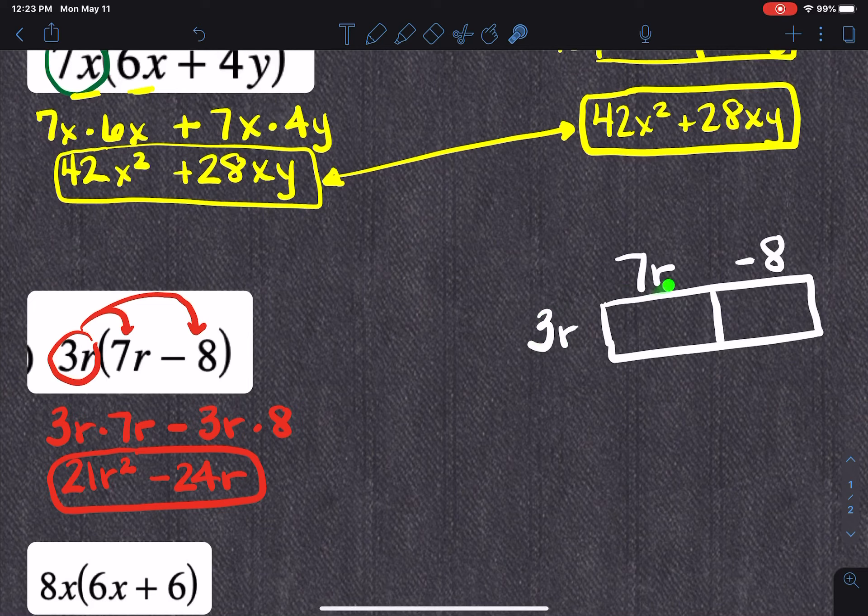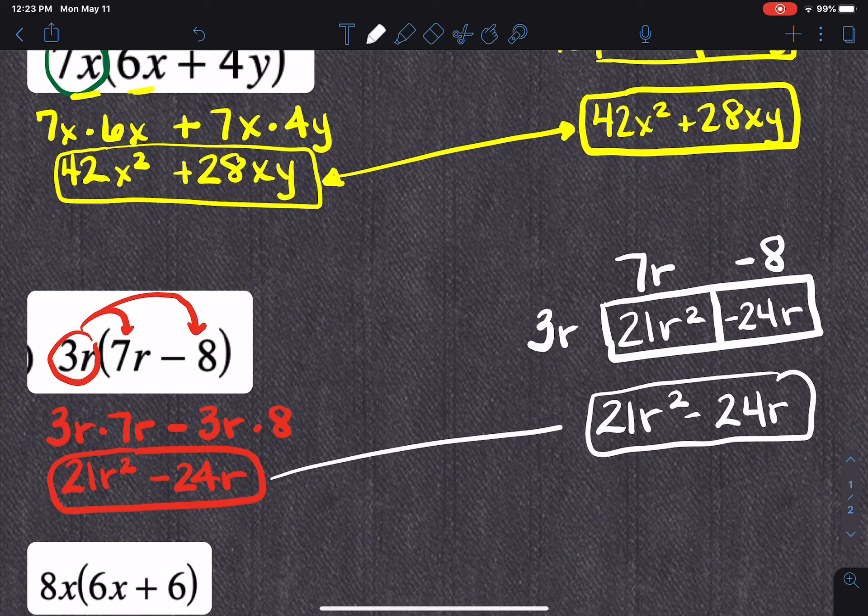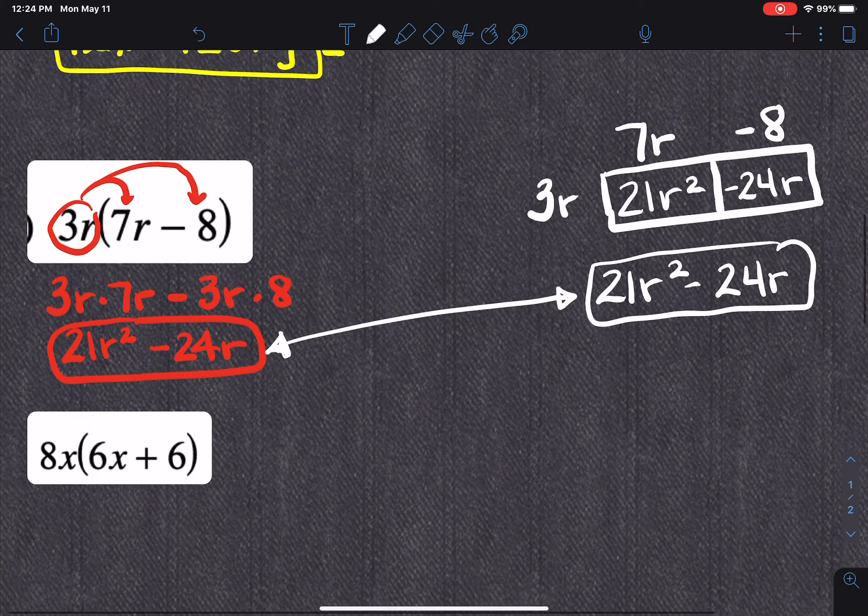Okay, so 3R times 7R is 21R squared and 3R times negative 8 is going to be negative 24R. So then we're going to take our terms from this and put them together to make our expression. So 21R squared minus 24R. And you'll notice you get the same answer either way. Now, most kids will say they do prefer the box method because it keeps stuff together. It looks like it takes up less amount of space. In the long run, no matter how many terms we have in the first expression or in the second, you're probably going to have answers that come together a little bit easier.